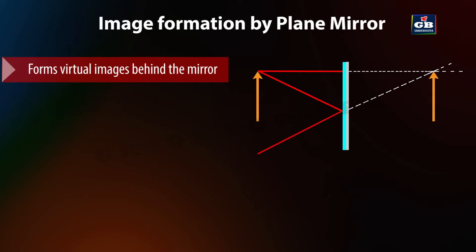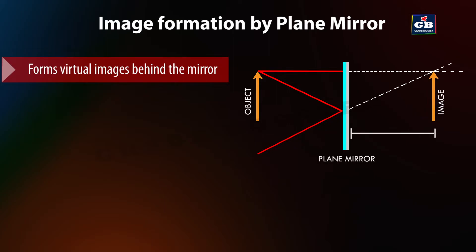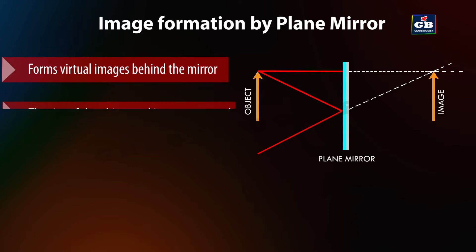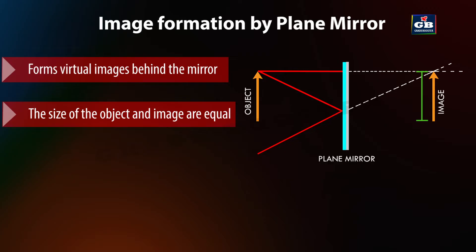Image formation: plane mirrors create virtual images that appear to be located behind the mirror at the same distance as the object in front of the mirror. These virtual images are not real — that means they cannot be projected onto a screen. They are formed by the apparent intersection of reflected light rays when extended backward.